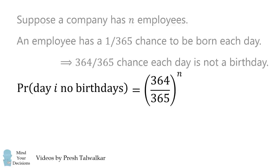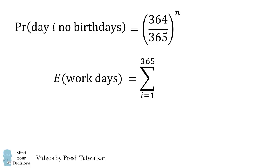Now we need to take the expected workdays, which will be this sum over all of the 365 days in the year. We substitute in the formula, and then we sum from 1 to 365 to get 365 multiplied by 364 over 365 all to the power of N.